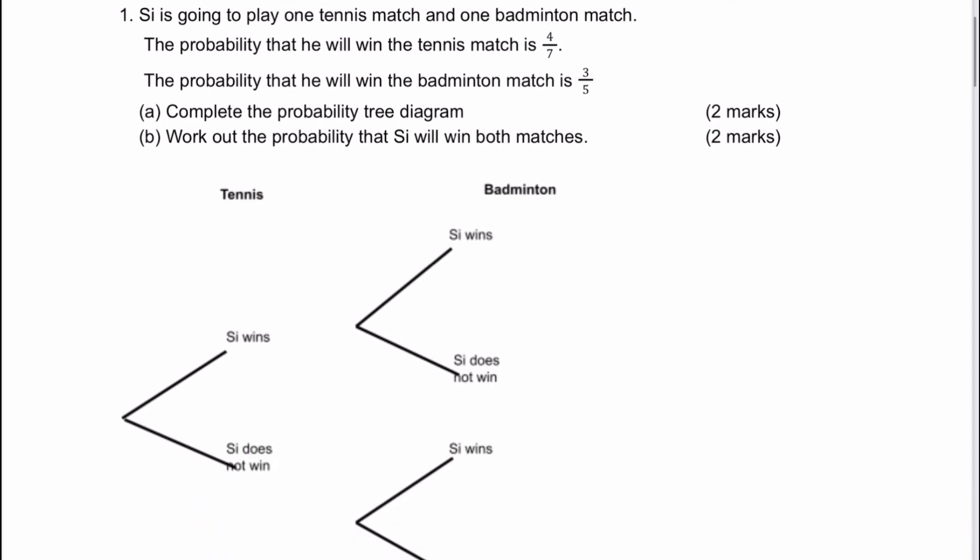So question number one is Si is going to play one tennis match and one badminton match. The probability that he will win the tennis match is four out of seven. So what we would do is if we look at tennis, that's going to be four out of seven for win and therefore three out of seven for does not win or lose.